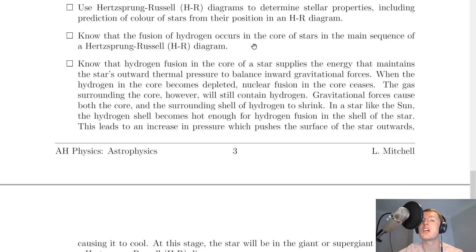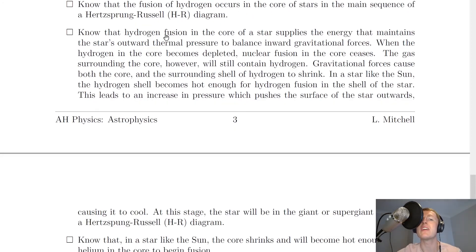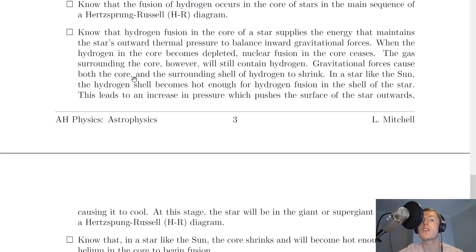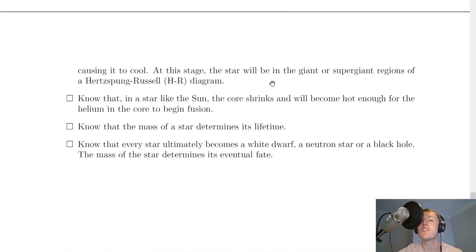You need to know that hydrogen fusion occurs in the core of main sequence stars, supplying the energy that maintains the star's outward thermal pressure to balance inward gravitational forces. When the hydrogen in the core becomes depleted, nuclear fusion in the core ceases. The gas surrounding the core still contains hydrogen, and gravitational forces cause both the core and surrounding shell to shrink. In a star like the Sun, the hydrogen shell becomes hot enough for fusion, increasing pressure and pushing the surface outward, causing it to cool — at this stage the star is in the giant or supergiant region of the HR diagram.